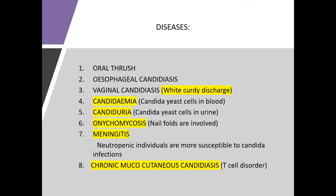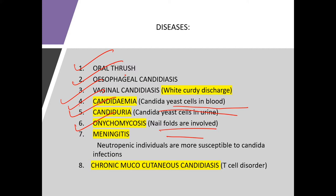The diseases caused by Candida include: oral thrush, esophageal candidiasis, vaginal candidiasis, candidemia (Candida yeast cells in blood), Candida in urine, onychomycosis when nail folds are involved, meningitis in neutropenic individuals, and chronic mucocutaneous candidiasis, which is a T-cell disorder and a lifelong condition.